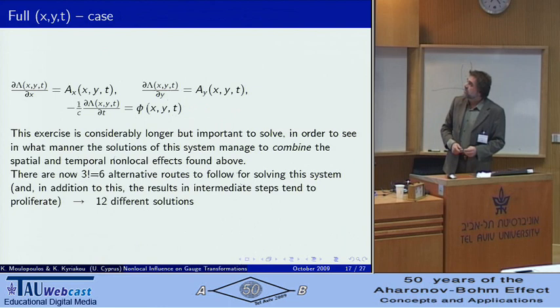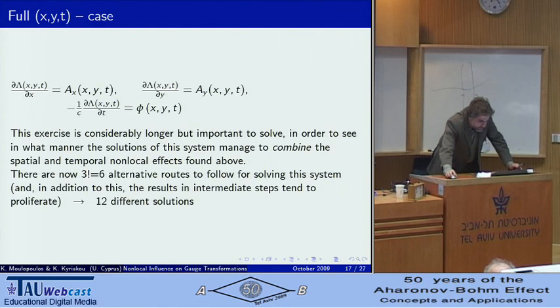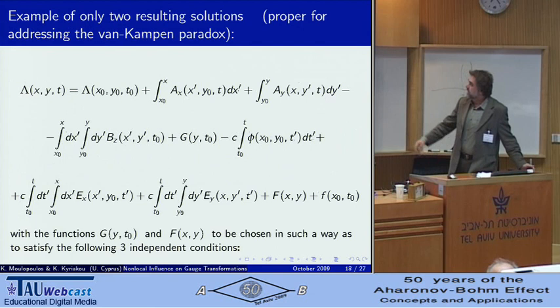And I come to the final point of the full x y t problem. We have a two-dimensional system with the full dynamics. We have to solve this system of differential equations. There are three now. It's a long exercise actually. There are 12 different results that come out. Here I just give you one.